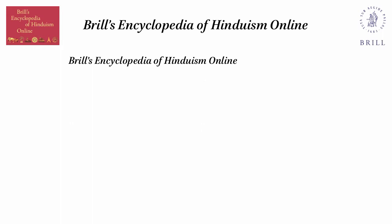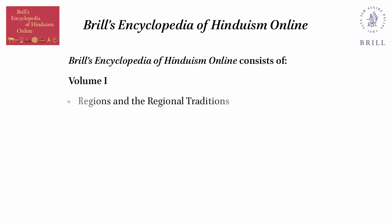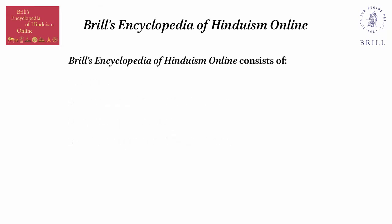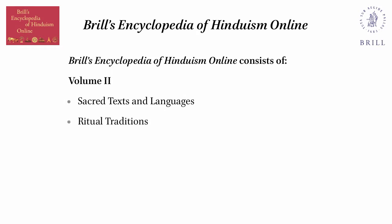Brill's Encyclopedia of Hinduism consists of Volume 1: Regions and the Regional Traditions, Sacred Space and Time, Gods, Goddesses, and Divine Powers. Volume 2: Sacred Texts and Languages, Ritual Traditions, Arts, Concepts.